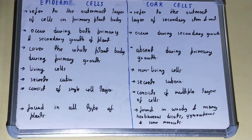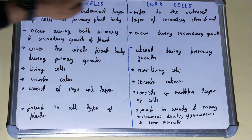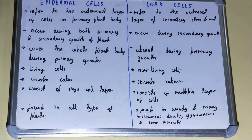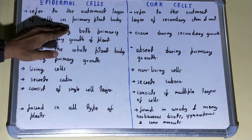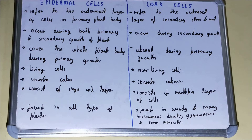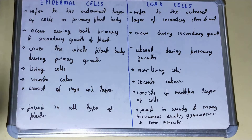In this video I'll be helping you with the difference between epidermal cells and cork cells. Epidermal cells refer to the outermost layer of cells on the primary plant body or primary plant structure.